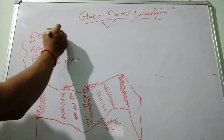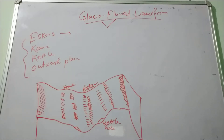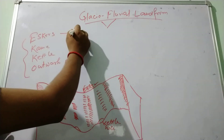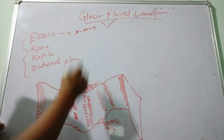First, come to the esker. Eskers are the long, narrow, and sinuous ridges of sand and gravel that are situated in the middle of the moraines. They vary in size, basically 10 to 100 meters in diameter.